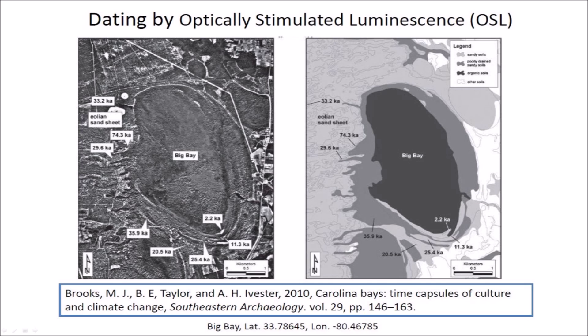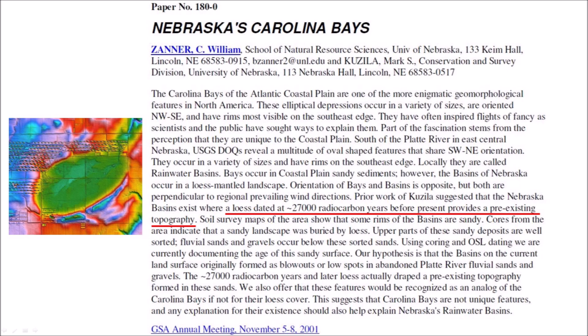A wide range of dates have been published for the Carolina Bays. A paper by Brooks and two co-authors produced dates ranging from 2.2 to 74.3 thousand years ago using optically stimulated luminescence, with all dates except one within the range of the Wisconsin Glaciation. We have to keep in mind that the impacts would have scrambled the stratigraphy of the terrain, so dates only provide a rough estimate of the geological time of emplacement. A 2001 paper by Zaner and Kusila says the Nebraska rainwater basins exist on top of terrain dated to about 27,000 years before the present, meaning the Carolina Bays and Nebraska basins are younger than 27,000 years if they formed contemporaneously.